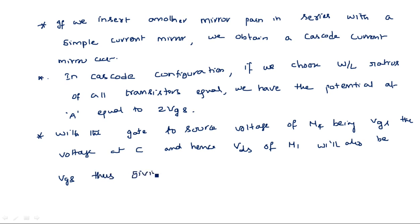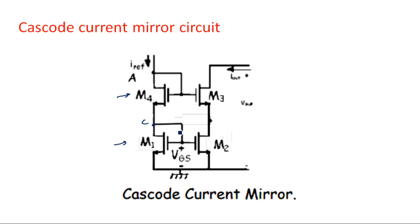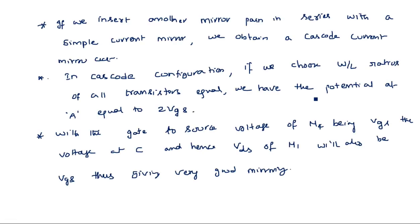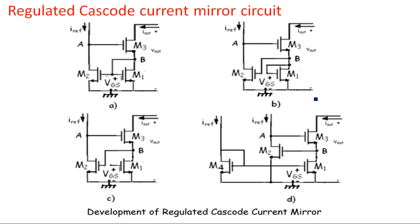This condition is satisfied for the cascode current mirror circuit where I_reference equals I_out, because we are trying to equate Vds1 and Vds2 by ensuring the node voltage at each relevant point is Vgs. This gives good current mirroring compatibility. For further improvement in output impedance and Vmin, we move to the regulated cascode current mirror circuit.